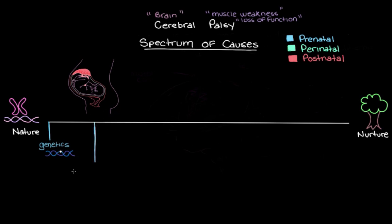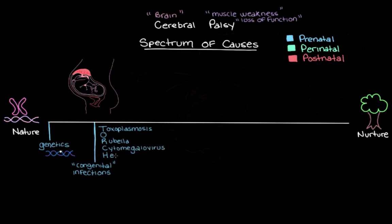The first prenatal event is infections — specifically infections the fetus gets from mom, known as congenital infections. One group that can cause cerebral palsy is referred to as the TORCH infections, a mnemonic for Toxoplasmosis, Rubella, Cytomegalovirus, and Herpes simplex virus types 1 and 2. The O stands for 'other' — a catch-all that includes infections like syphilis, which don't fit the letters but can still cause cerebral palsy.